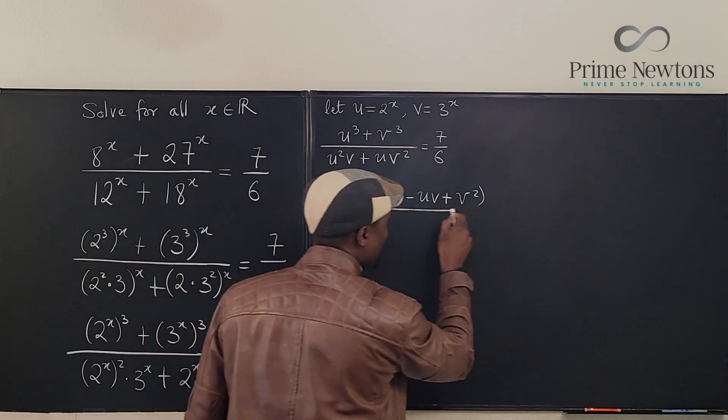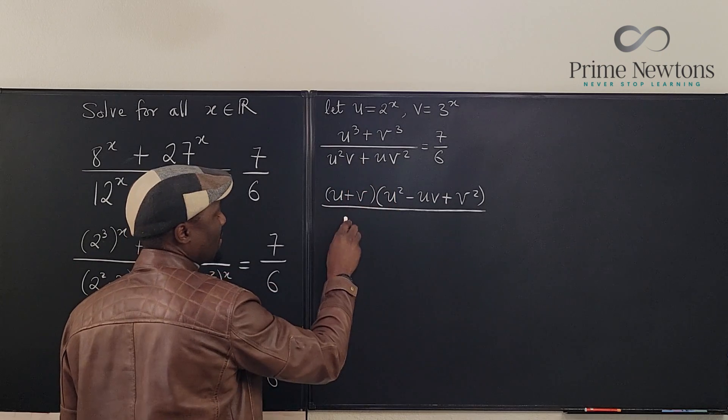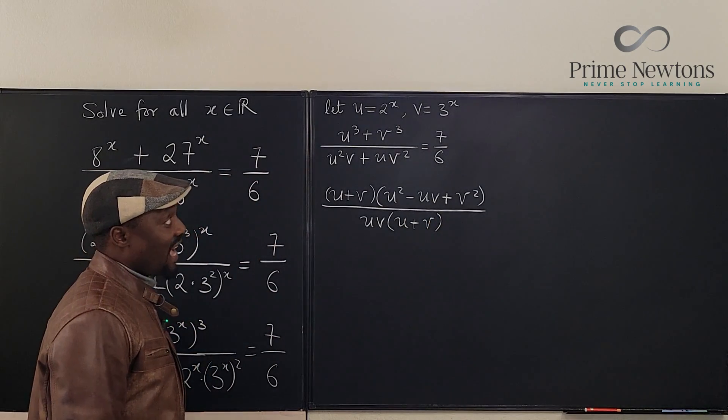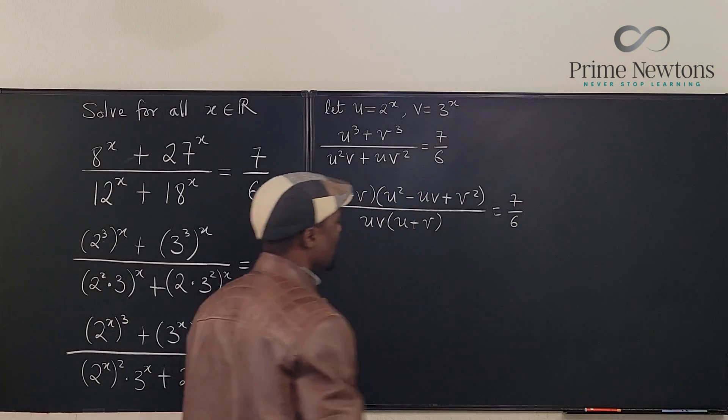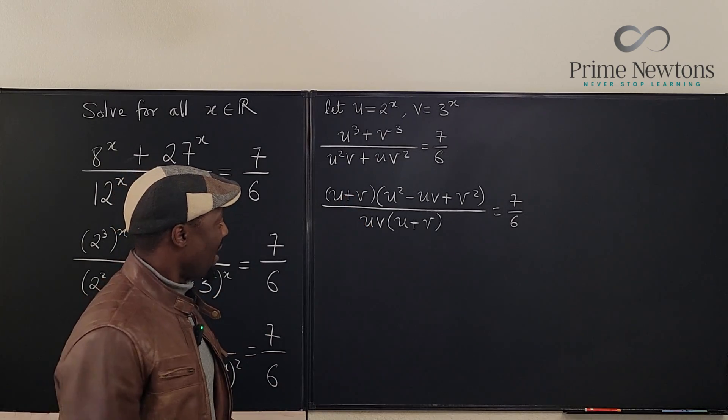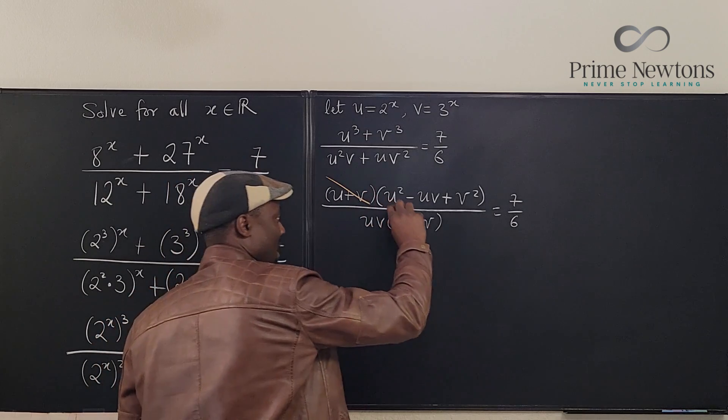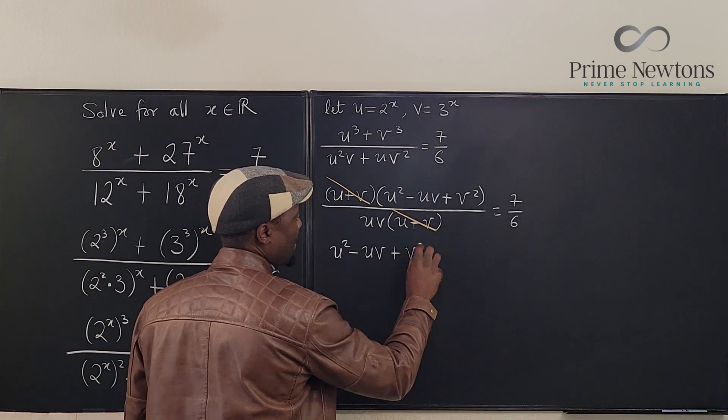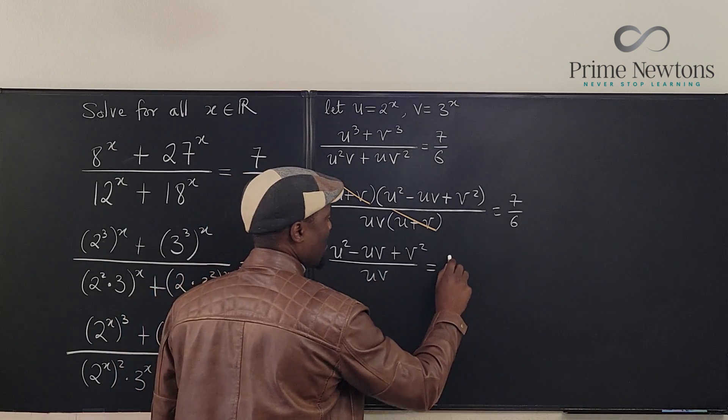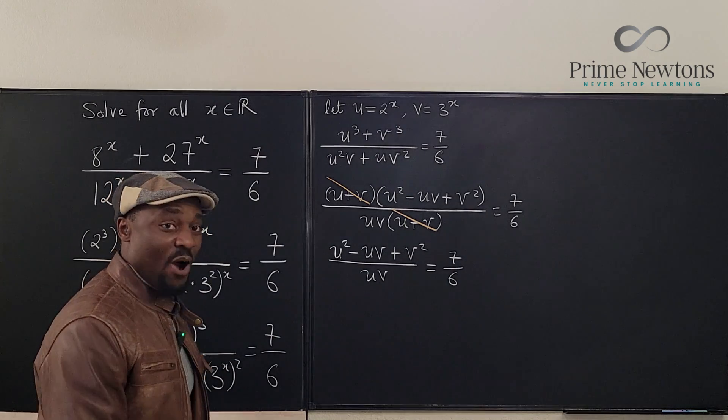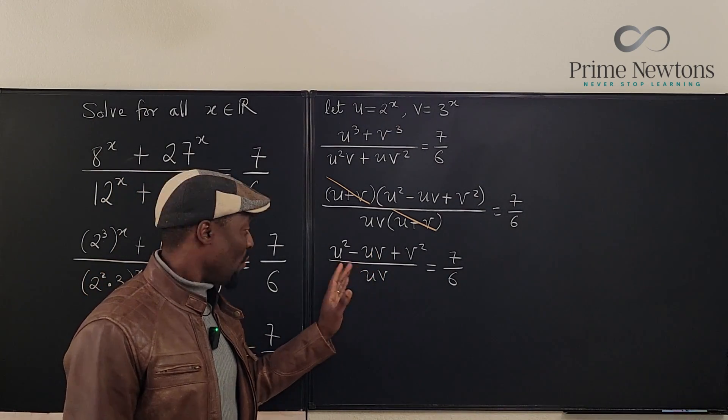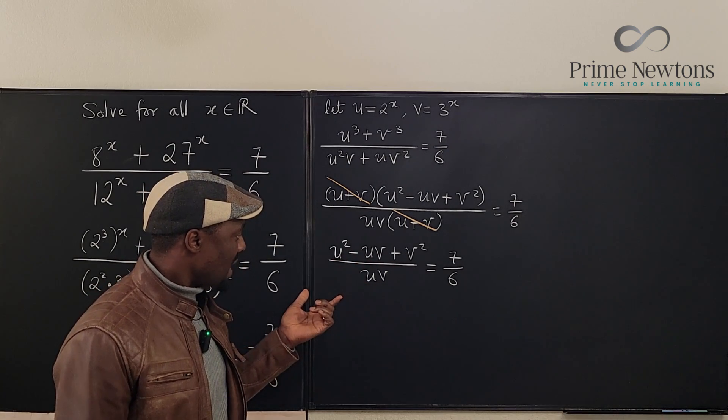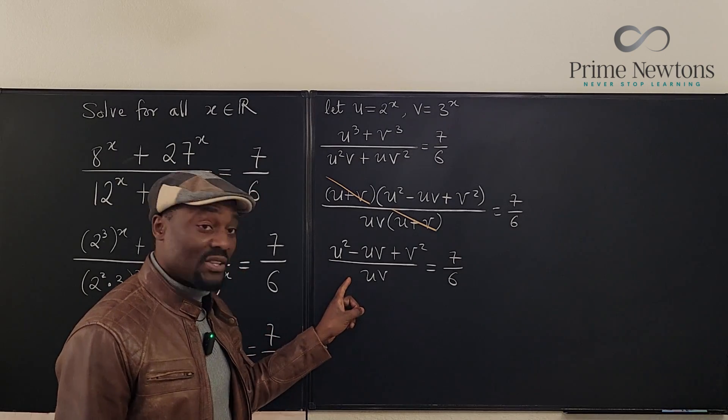If you factor the top, you're going to have u plus v multiplied by u squared minus uv plus v squared. That's the factored form of the top, and the bottom is uv times u plus v. This can cancel out. So we have u squared minus uv plus v squared over uv equal to 7 over 6. Now what is on top contains this also. So should we split? It's not going to help us splitting. So I think if we cross-multiply, we might end up with something that can be factored. And if we can factor it, then it saves us.